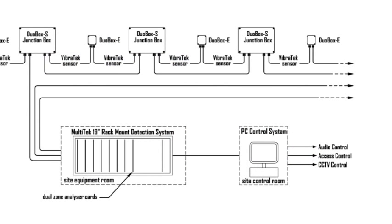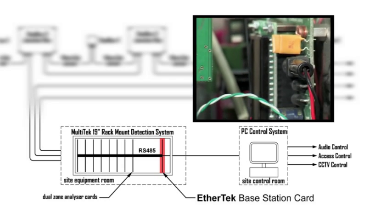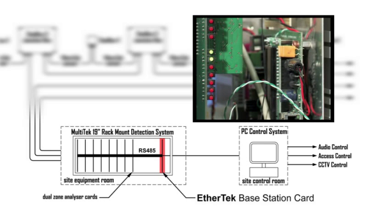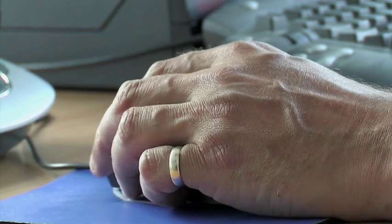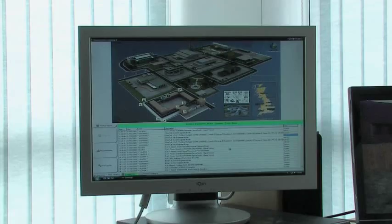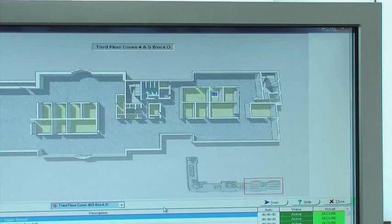Once again, an RS-485 communications bus is used to connect the cards running along the backplane of the rack. An Ethertech base station card converts signals on the RS-485 bus to ethernet form for interfacing to a PC. From this user interface, security personnel can configure and monitor the entire perimeter of the site.